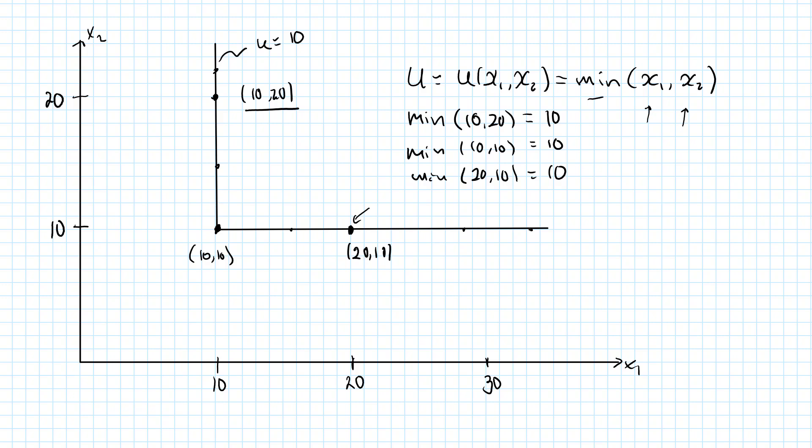Any bundle which is above this one and to the right of it must have an x1 value which is greater than 10 and an x2 value which is greater than 10, so the minimum must be greater than 10. Such a bundle will not be on my indifference curve. Similarly, if you go in this direction, then x1 is less than 10, so the minimum is less than 10.